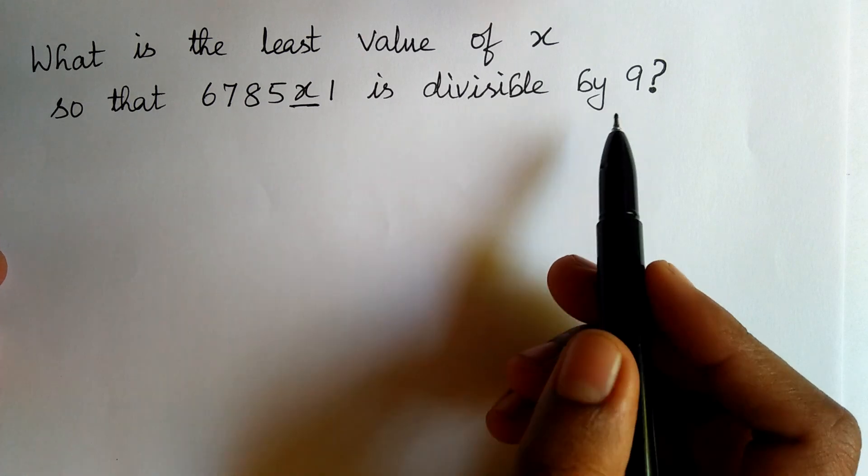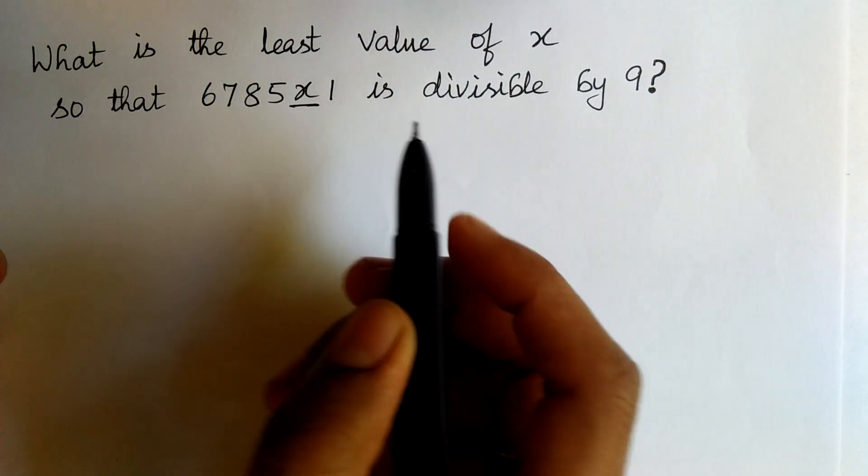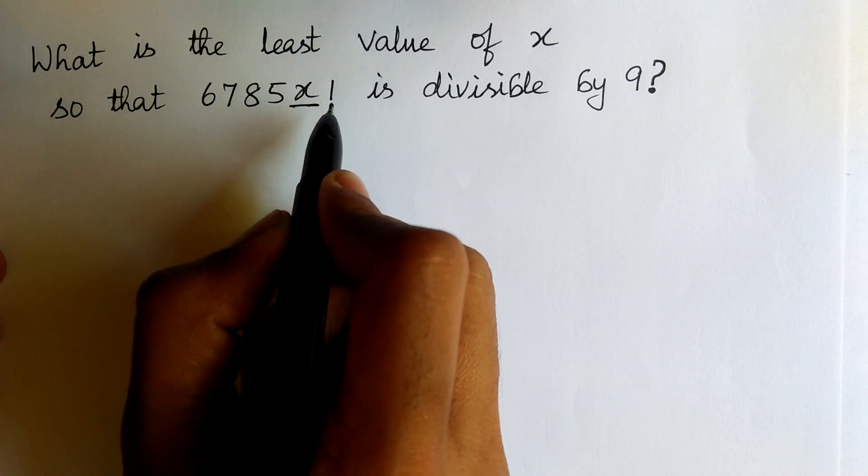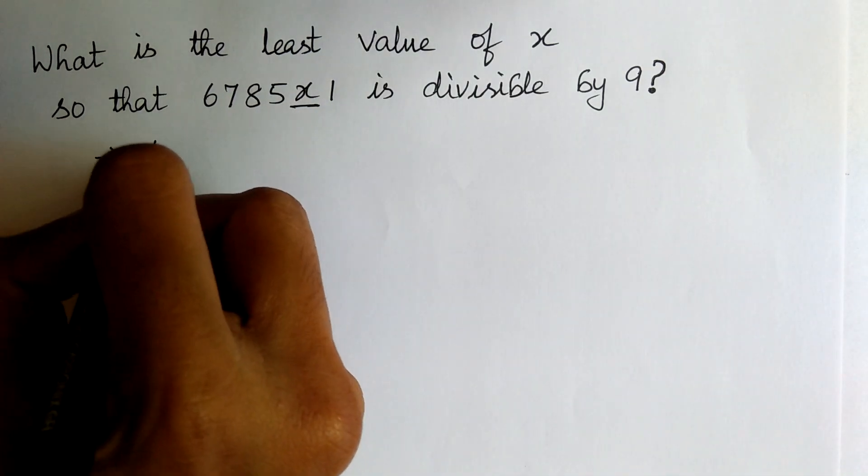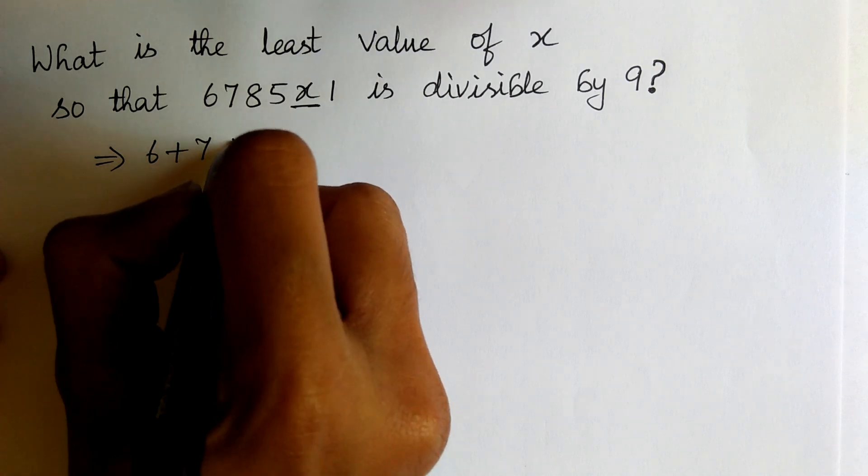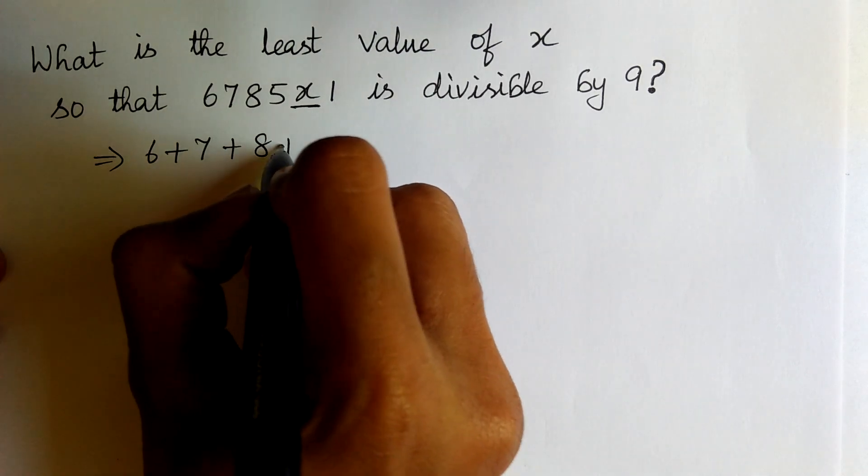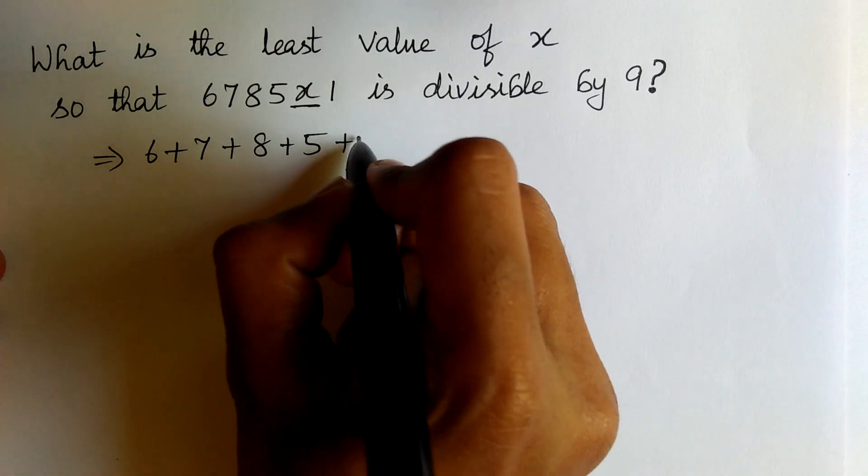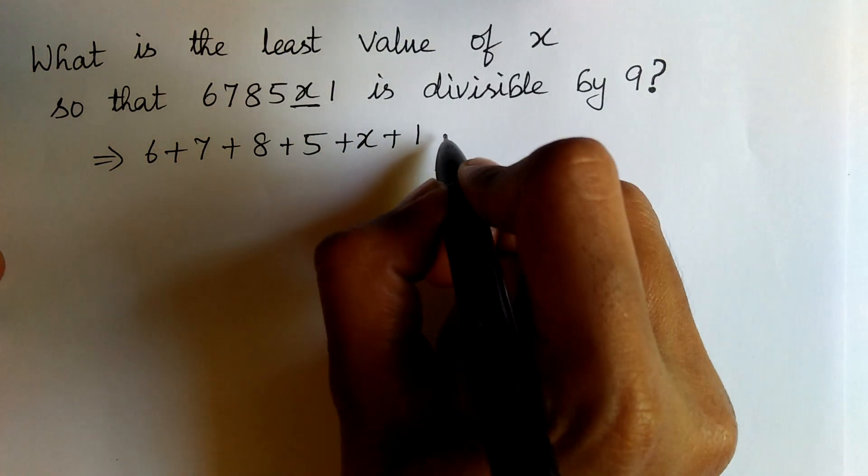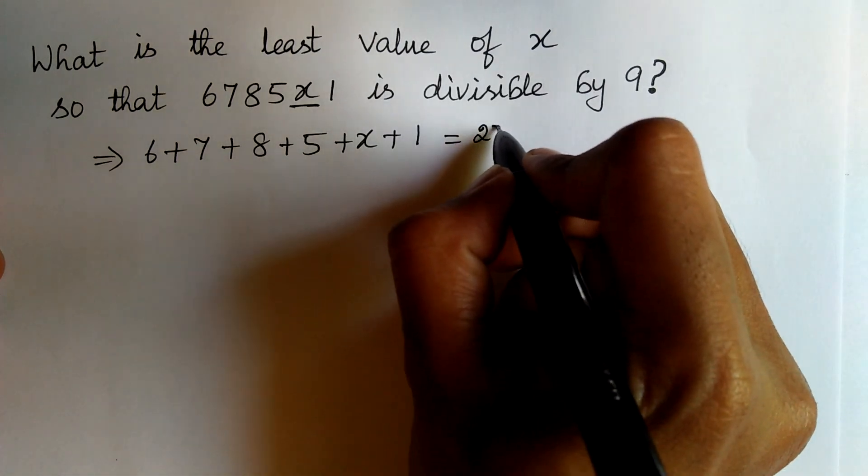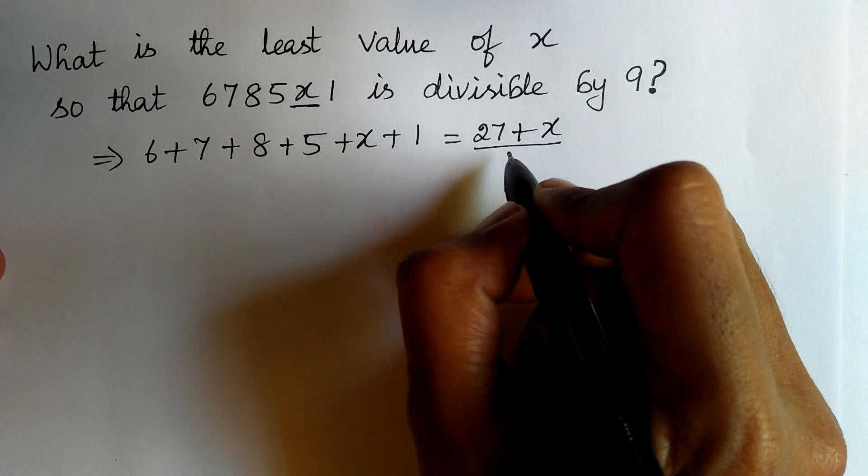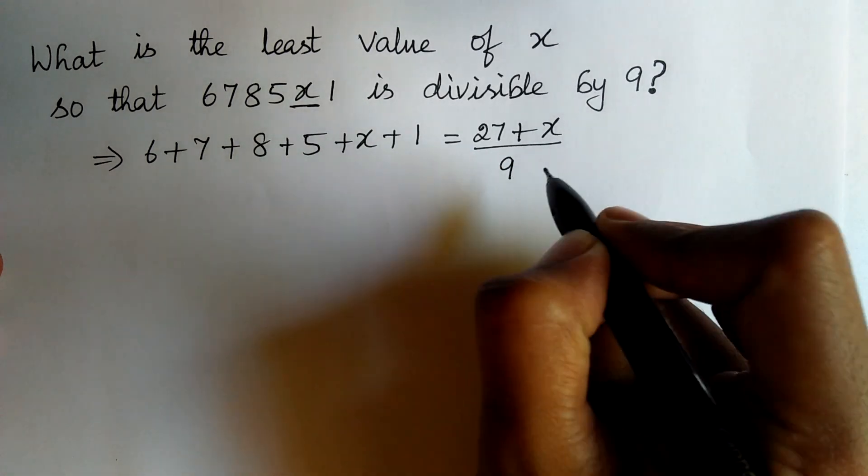We know that for the number to be divisible by 9, the sum of the numbers should be divisible by 9. Therefore, 6 plus 7 plus 8 plus 5 plus x plus 1 is equal to 27 plus x divided by 9.